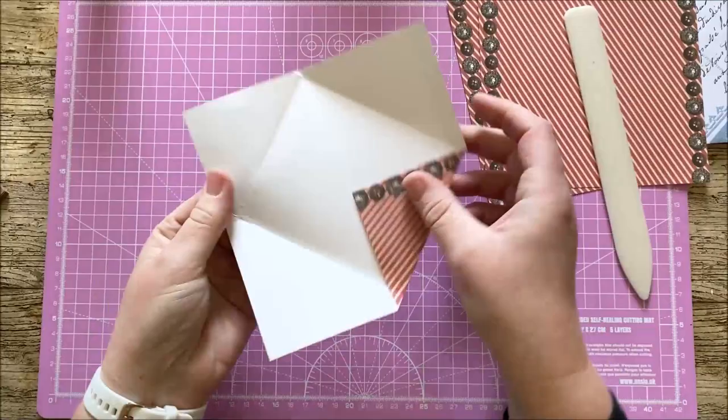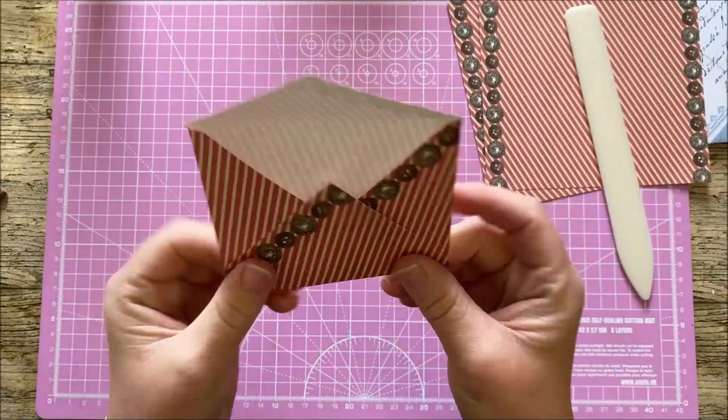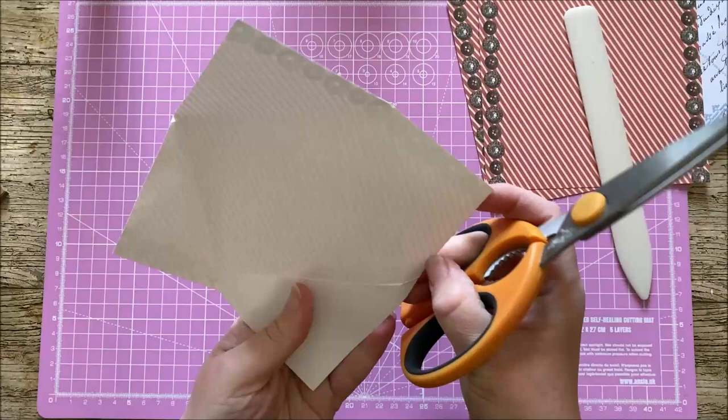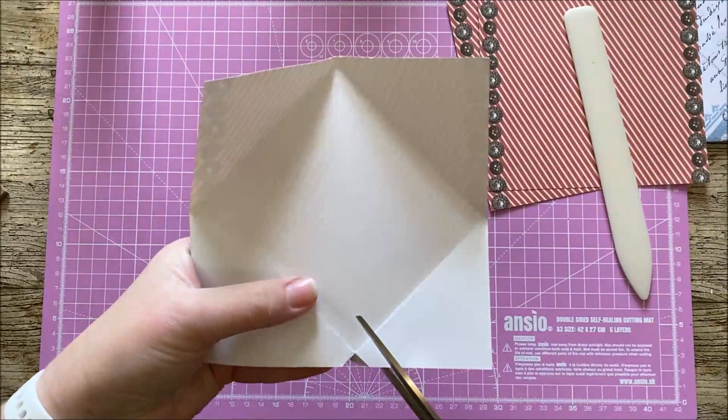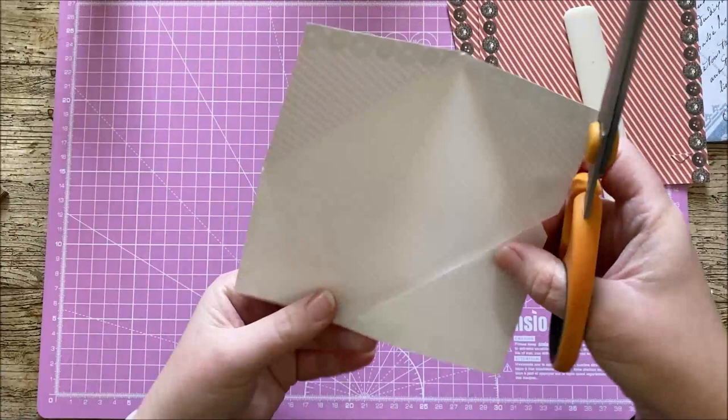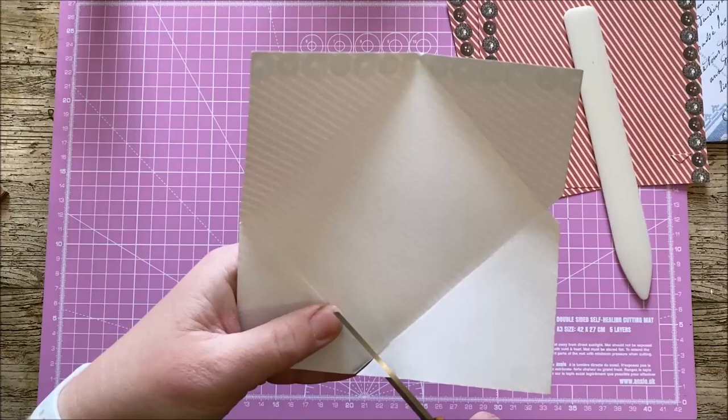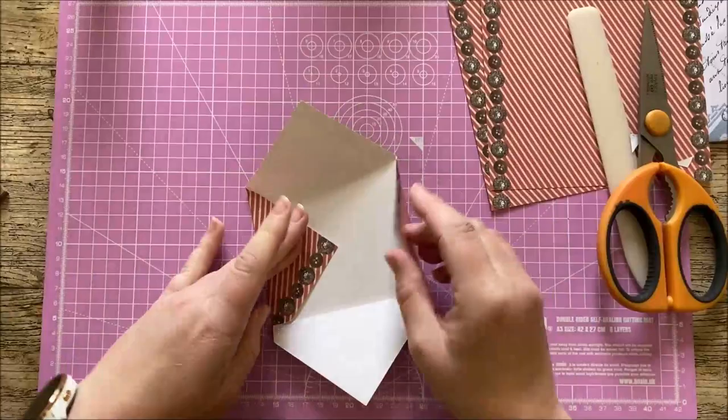You will notice about your envelope that you've got these little flaps of paper here, which they're not really bothering anybody. But just to get rid of the bulk because you don't like bulk in our journals, do we? You can just simply cut those little triangles out and that will just make it a little bit easier when folding and sticking your envelope.